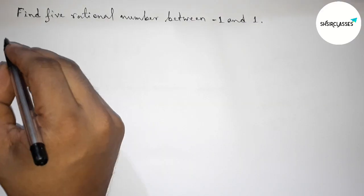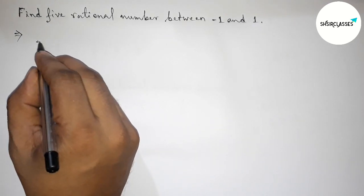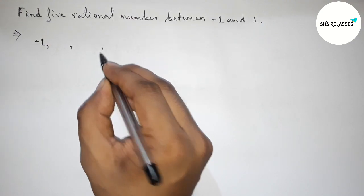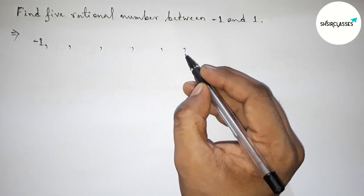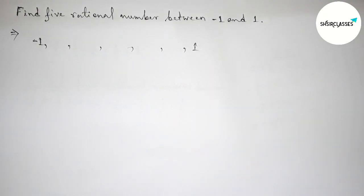First of all, let us solve this problem. So here between minus one and one we have to find five rational numbers. So first of all, taking five blank spaces to find five rational numbers. Okay, so next roughly discussing here some important calculations.